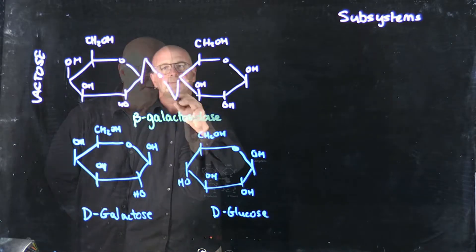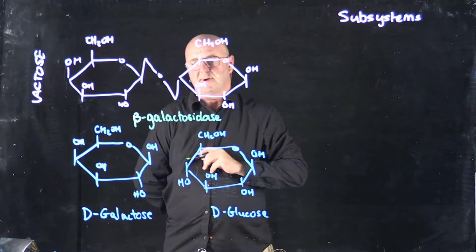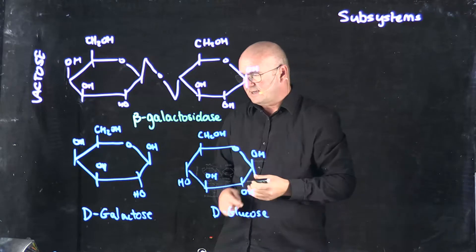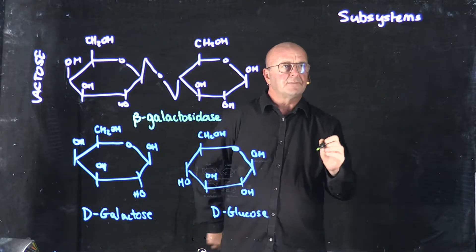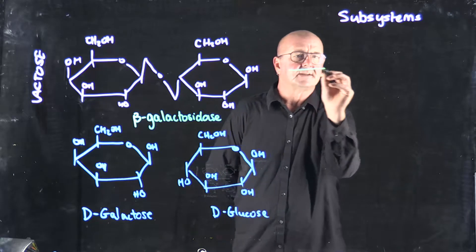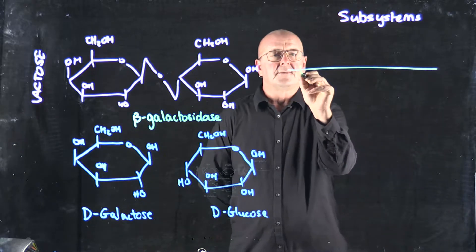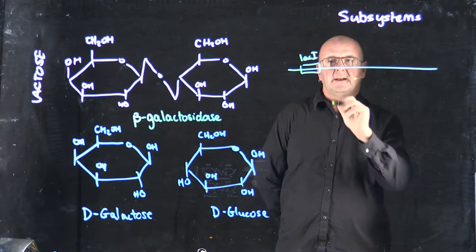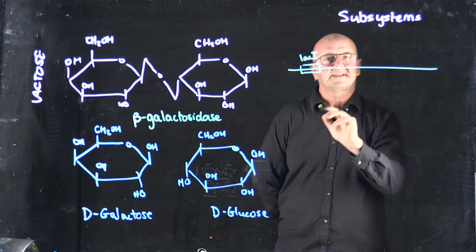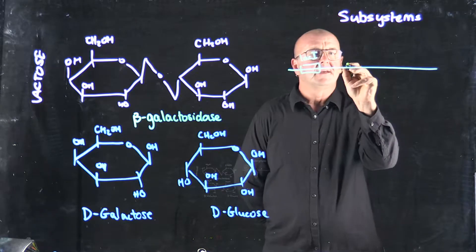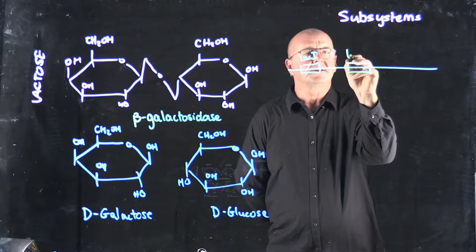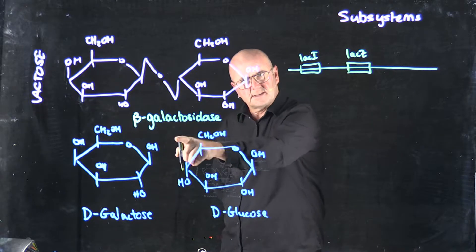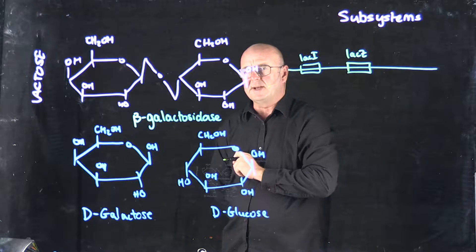Once that bond has been broken, the bacteria can use those two different compounds. They prefer to use glucose, but a lot of bacteria can also use galactose too. In E. coli, beta-galactosidase is encoded in an operon which contains four genes. We have a gene called LACI, and LACI is the repressor that controls the expression of the other genes. And then we have LACZ, which is the enzyme that actually does this pathway — beta-galactosidase.